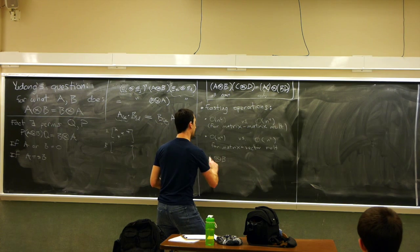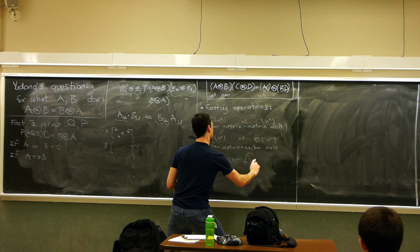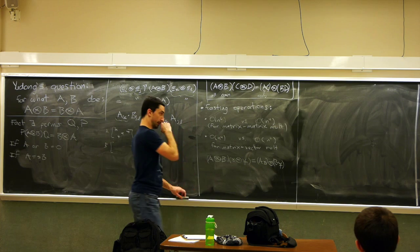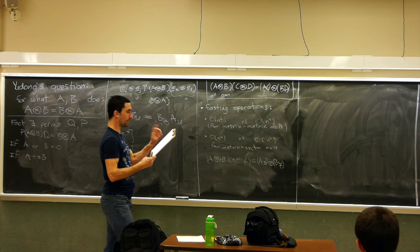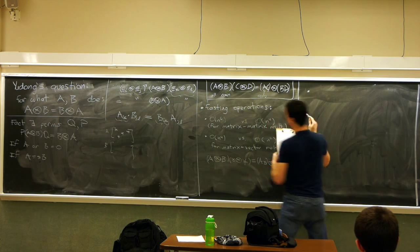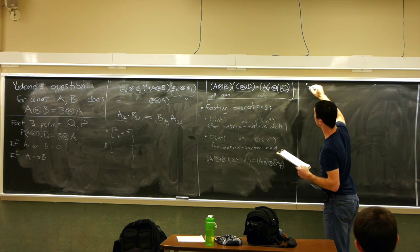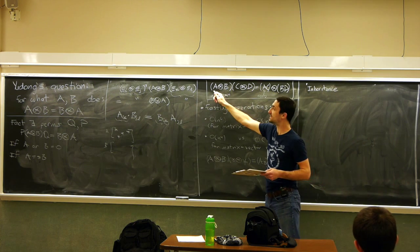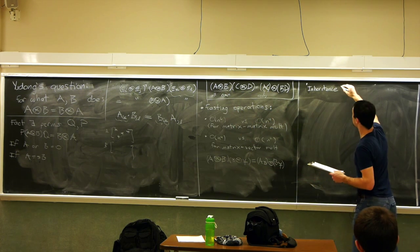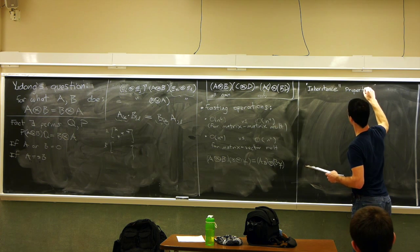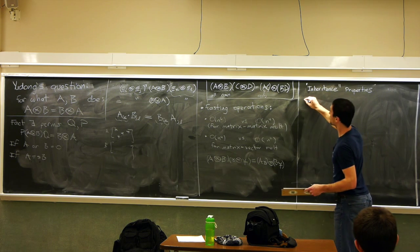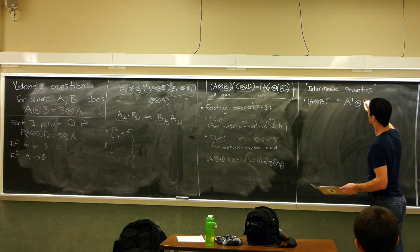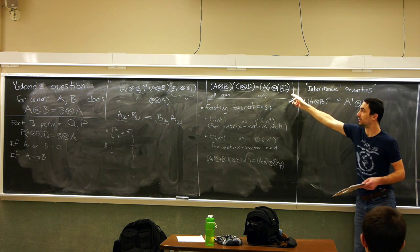We also used that property to look at eigenvectors. And a class of things we did was inheritance properties — what do we know about the structure of A tensor B if we know something about A and B? The first property is invertibility: if both A and B have inverses, then A tensor B is also invertible, and we proved this using that property.